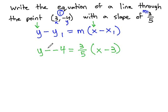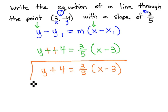The only thing really to do here is to simplify minus negative 4, to give us y plus 4, equals 3 fifths, times x minus 3. This is now the equation of a line, that if we were to go through the work of making a t-table, graphing the points, we would find that it goes through the point 3, negative 4, and it has a slope of 3 fifths.